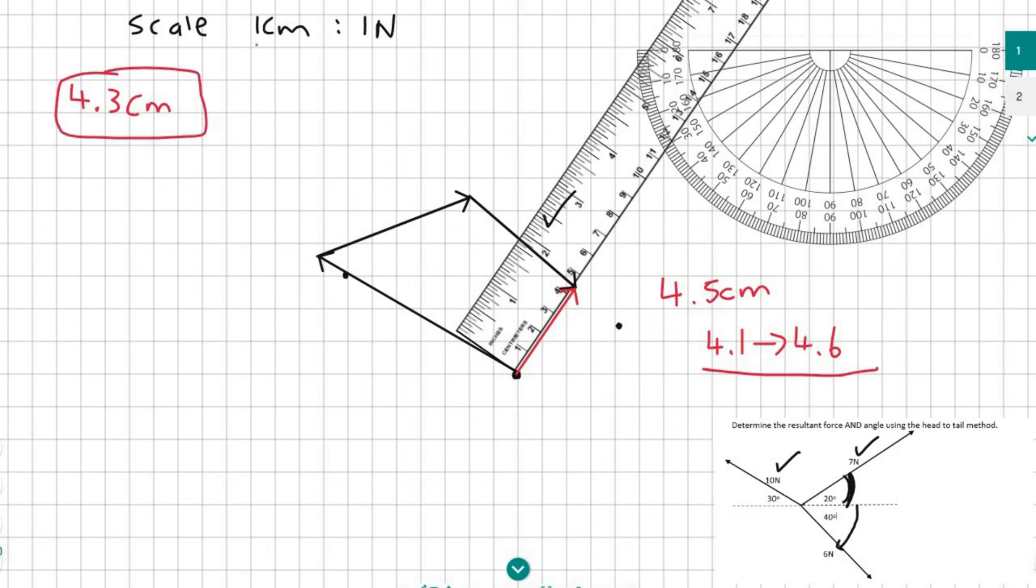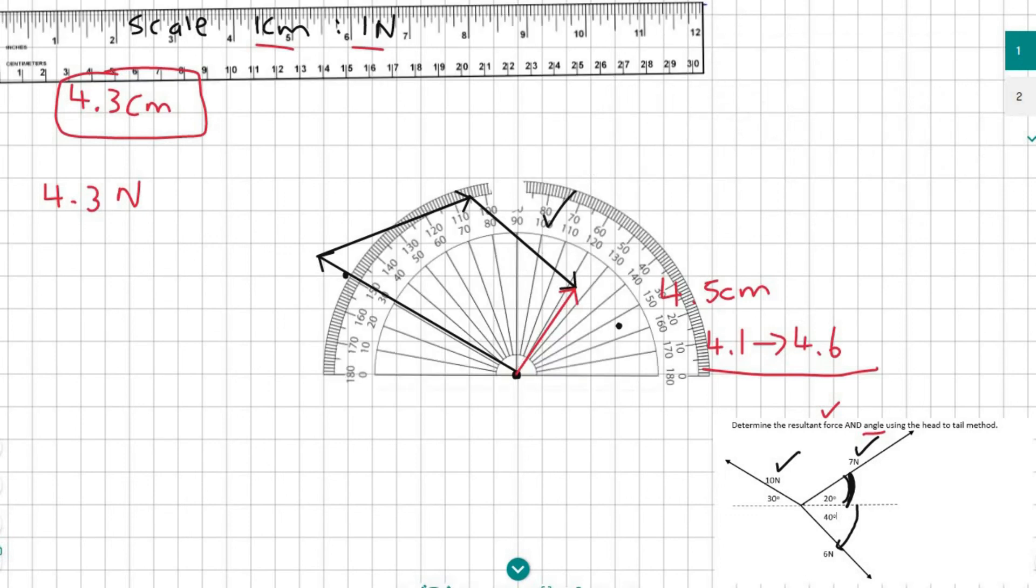So because it's 4.3 centimeters and our ratio is one to one, we can say that the answer is 4.3 newtons. But now guys they would like the resultant force and they also want the angle. Now if I look carefully at that red line I can see that the angle is probably going to come out somewhere over here, which is around 57 degrees.